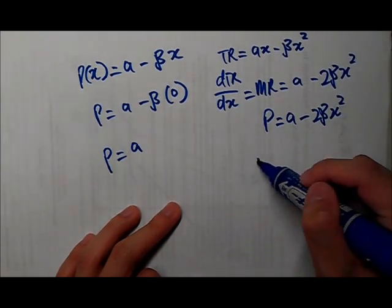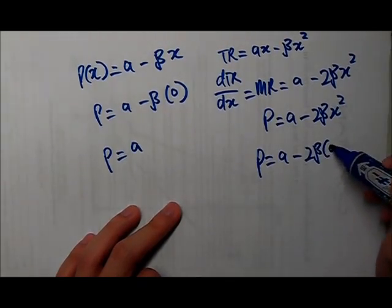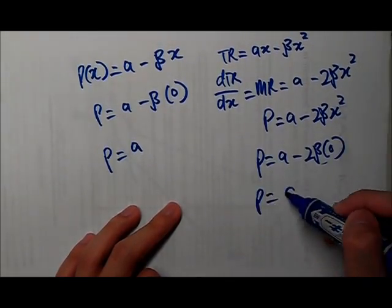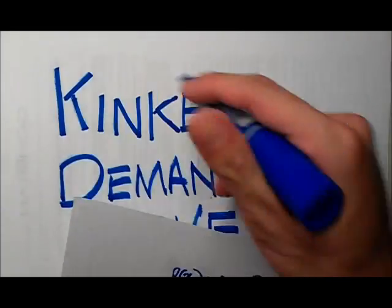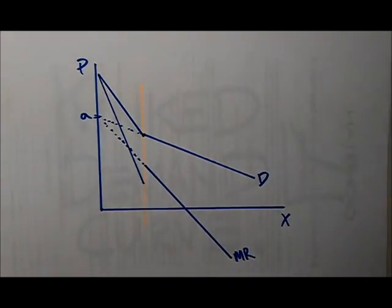You let this equal to zero. This whole thing is equal to zero. So, P still equals to A. See. That's why they are at the same point. So, that's why we got our MR curve. It's that easy.